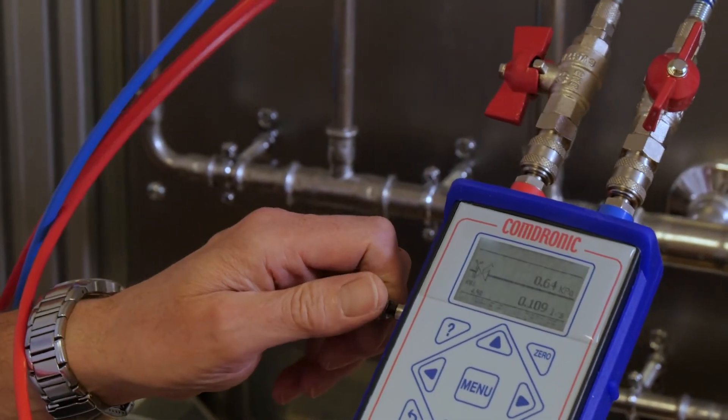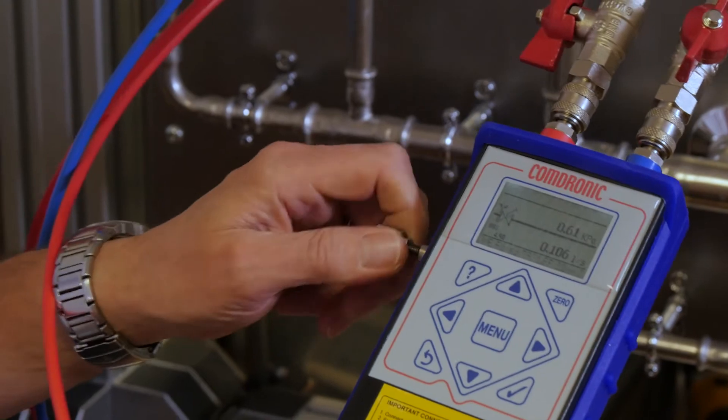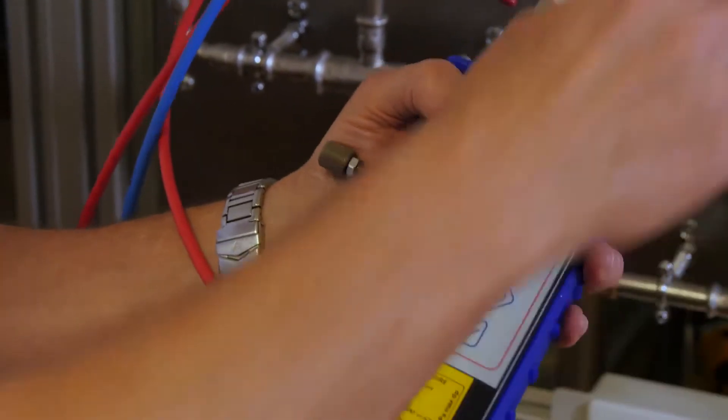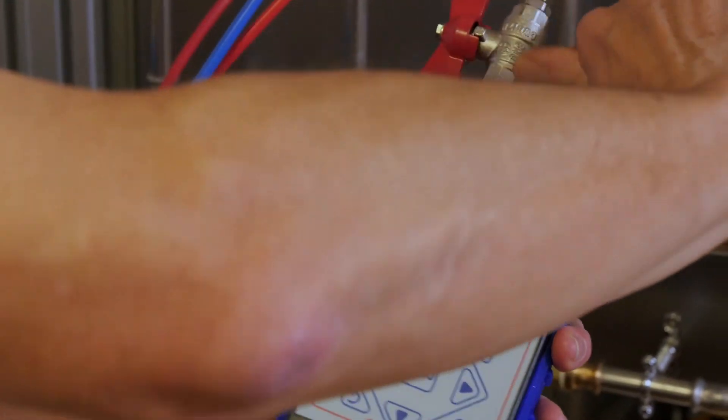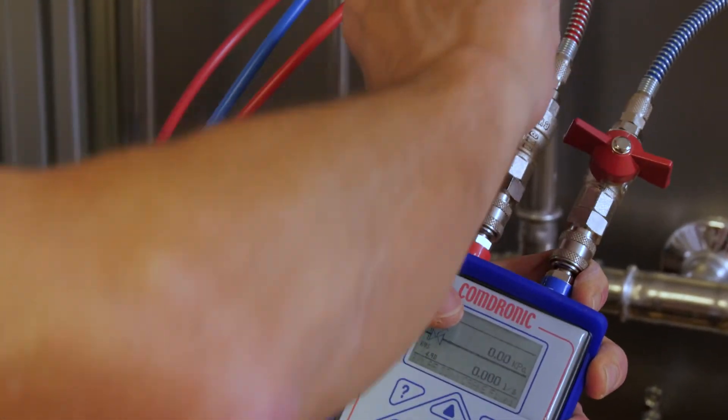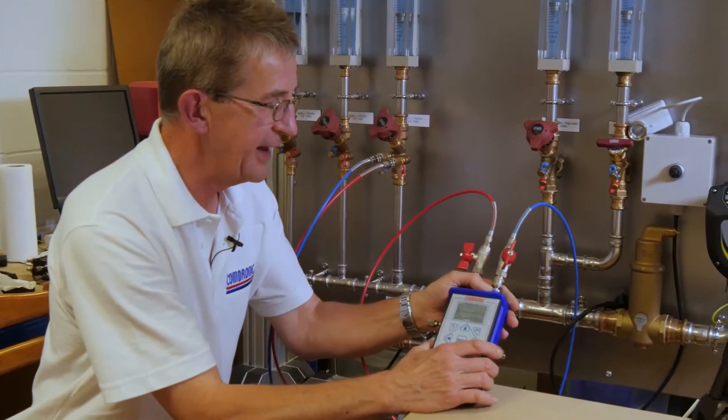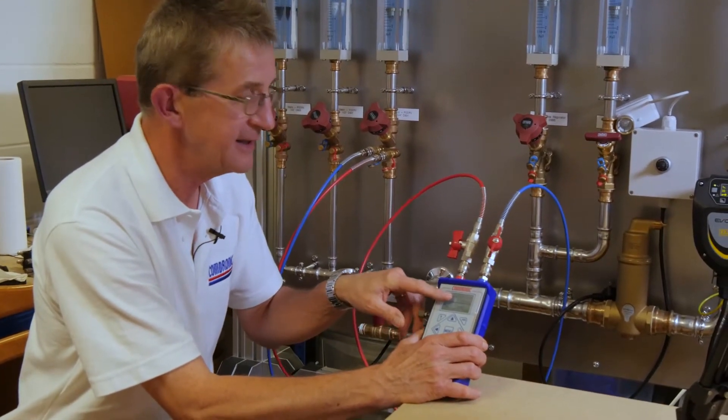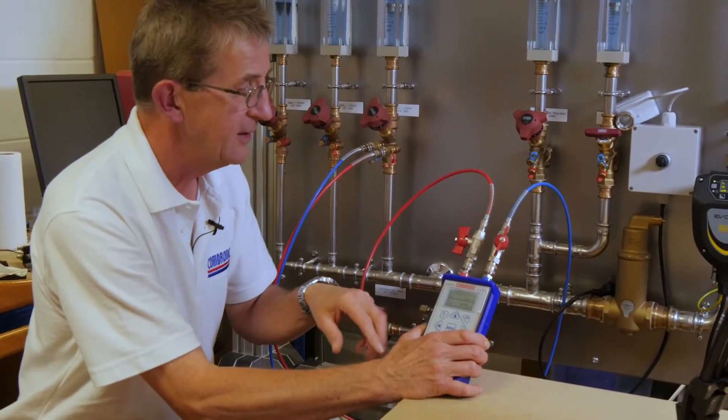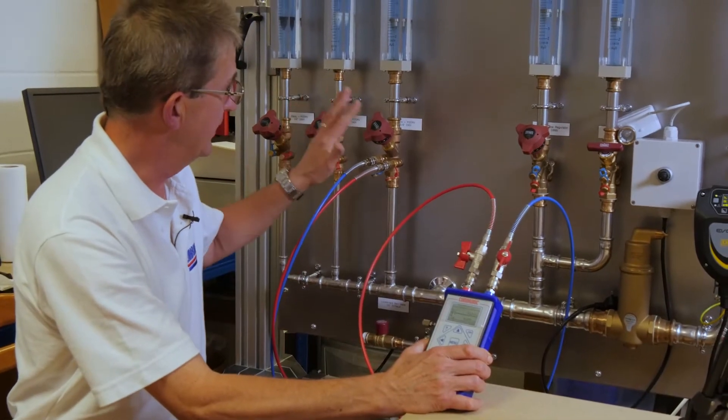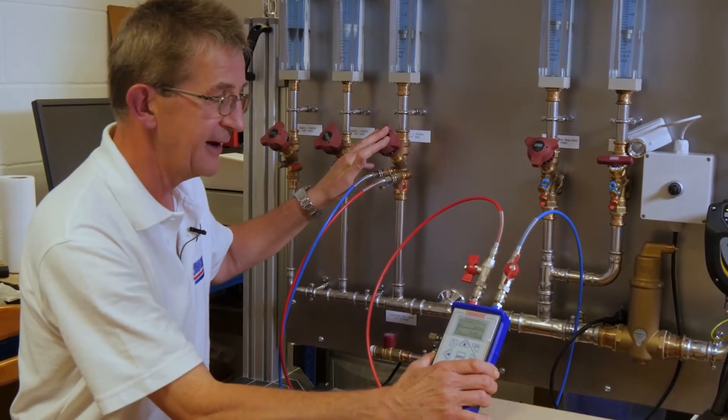So we can now open the equalizing valve, close the valves on the hoses, and we can disconnect from the system. Okay, so now we have achieved the desired flow rate. We're happy with that. We can lock the valve off and we can move on to the next valve. In order to do that we need to safely disconnect the hoses.